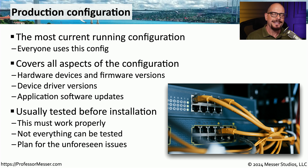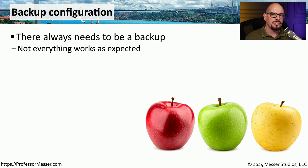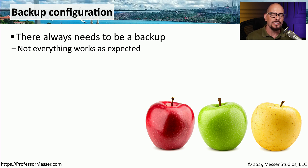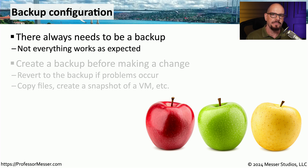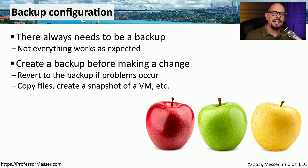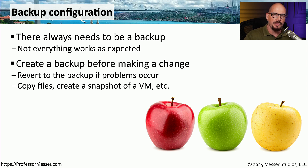Not every possible scenario can be tested in our lab, so we need a plan if something goes wrong in production to be able to revert back to a previous configuration. In situations where something does not go as designed, we need some type of backup that we can revert to. This applies to our firewalls, switches, routers, operating systems, and anything else we might be changing. The standard operating procedure is to make a backup of that system before making any type of change.